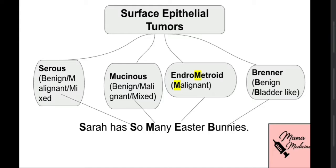Surface epithelial tumors are further divided into four types: serous and mucinous, which are the most common forms, and endometrioid and Brenner. Among these, serous and mucinous can be benign, malignant, or mixed. Endometrioid has an 'M' in it, so it is mostly malignant, whereas Brenner has a 'B' in it, so it is mostly benign — though it can be malignant.